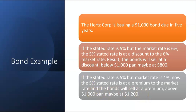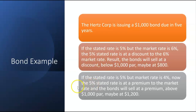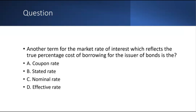Even though the stated rate is 5%, the true effective cost of borrowing will only be 4%, because the company collects $1,200 but pays interest based on the $1,000 par. Remember, the market rate is not known in advance. The stated rate is known in advance — we know it's a 5% bond, we know how much cash interest will be paid: 5% times $1,000 par. Whether the bond sells at a discount, premium, or par, that cash interest will always be 5% times $1,000 par.